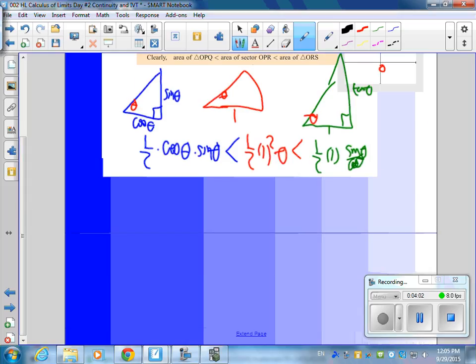So then what I'm going to do is I'm going to say, okay, this is going to be cosine theta times sine theta over 2. This is going to be 1 half theta. This is going to be 1 half sine theta over cosine theta.